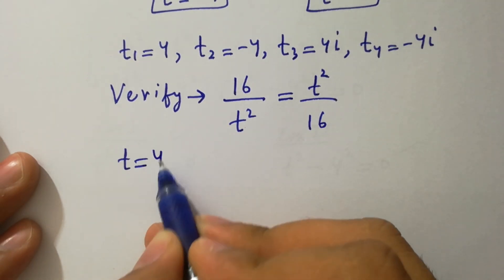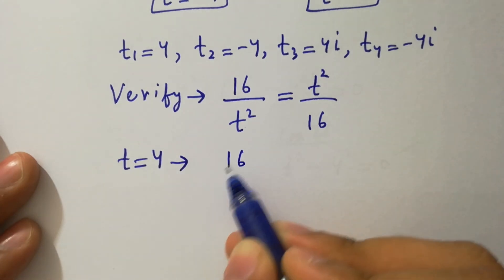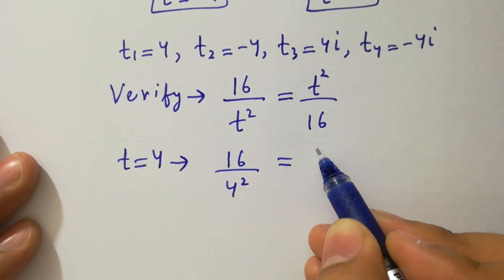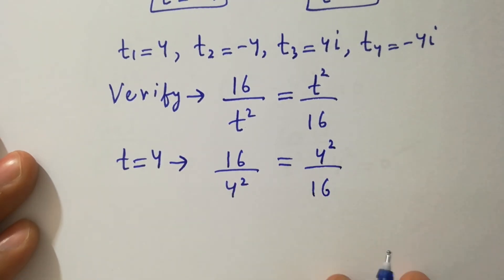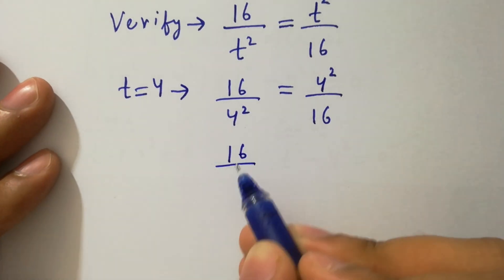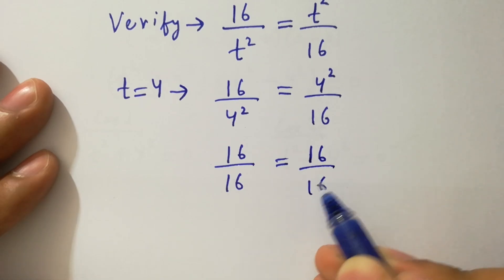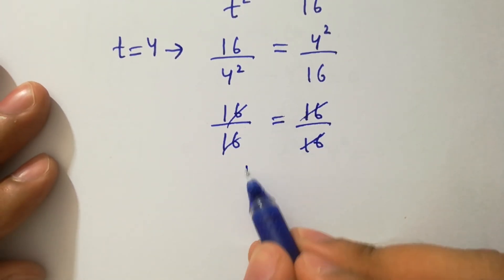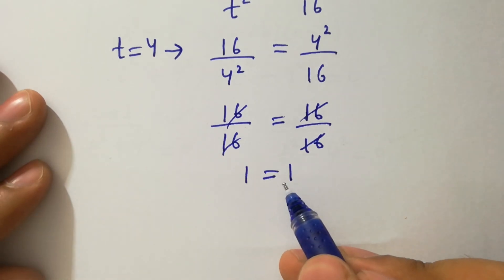Verification: put t equals 4 into the equation. We have 16 over 4 squared equal to 4 squared over 16, which is 16 over 16 equal to 16 over 16. The 16s cancel and we have 1 equal to 1, so left hand side equals right hand side.